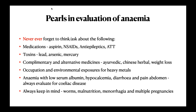Whenever you find refractory iron deficiency anemia — patient either not improving or improving then deteriorating again — think of those three causes. Lastly, always keep in mind in our country: worms, malnutrition, menorrhagia, and multiple pregnancies. Never forget these four things. For iron deficiency anemia, deworm. If the patient is losing weight or not eating enough, think malnutrition. In women, always take a history of menorrhagia, and even in postmenopausal women, ask about postmenopausal bleeding. Multiple rapid pregnancies also deplete iron stores.